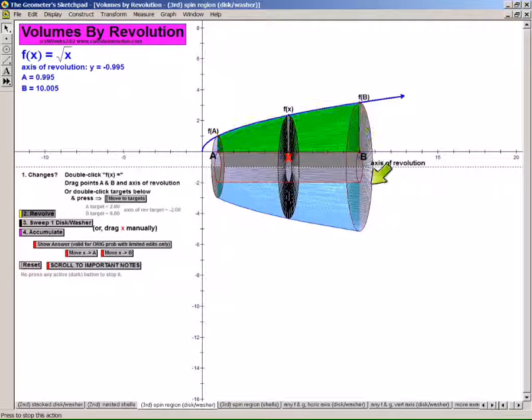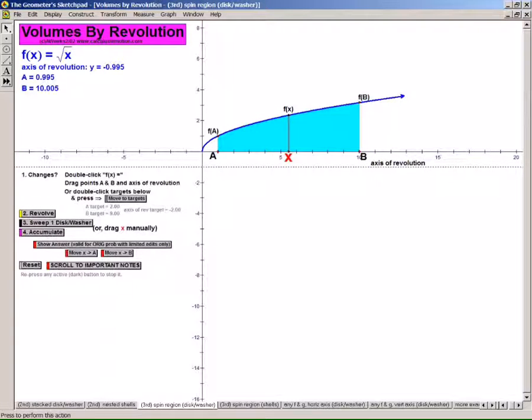Now you can see that this is a washer right here. It's not a solid disk. Not a solid disk in there. It's not a solid circle. But we're going to pretend it is. So pretend it is for a minute, and let's go back to when it was just this.